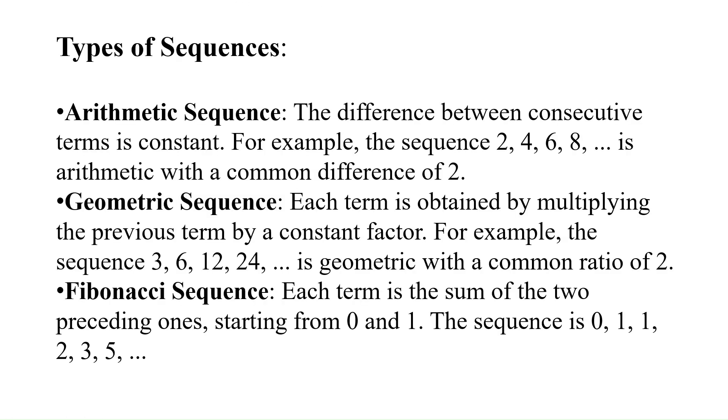Arithmetic sequence: where the difference between consecutive terms is constant. For example, the sequences 1, 3, 5, 7, 9 and 2, 4, 6, 8, 10, 12, 14, 16, 18 are arithmetic with a common difference of 2.